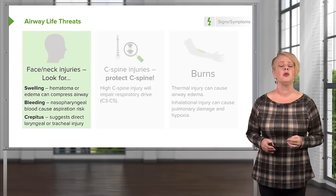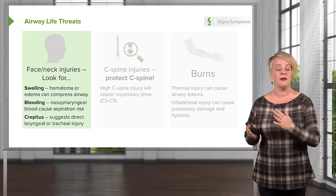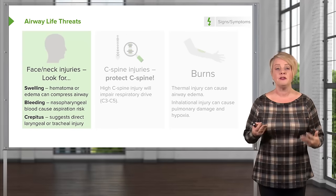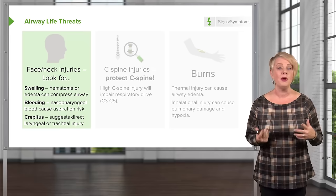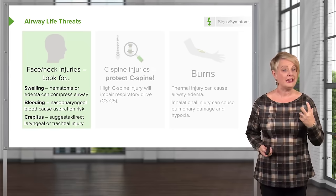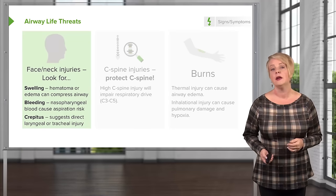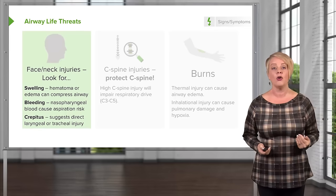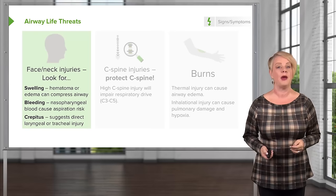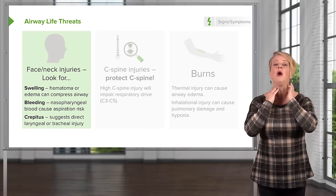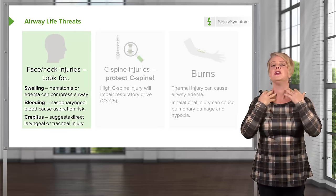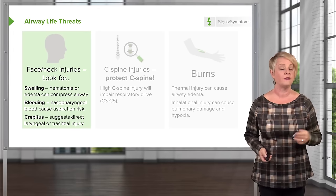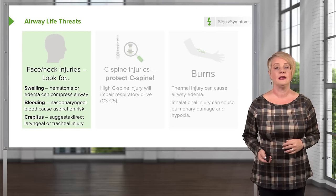What are the kinds of things we're looking for in terms of airway life threats? For patients who have a currently patent airway, things to look for include swelling — any hematoma or edema in the face and neck that can compress the airway. You want to look for bleeding, particularly nasopharyngeal bleeding going from the pharynx back into the oral cavity, which can cause aspiration. And lastly, we want to palpate for crepitus — that crispy, crunchy feeling in the neck and upper chest — which suggests injury to the larynx or trachea and would mandate definitive airway management.